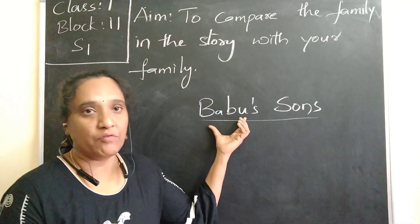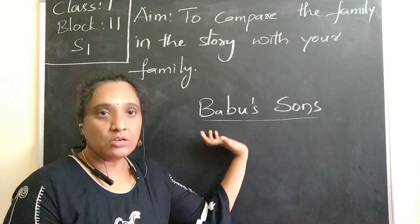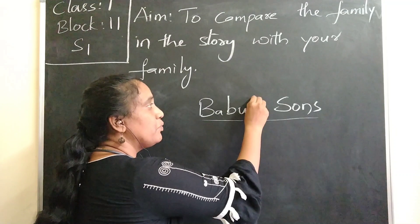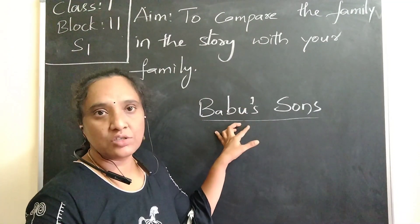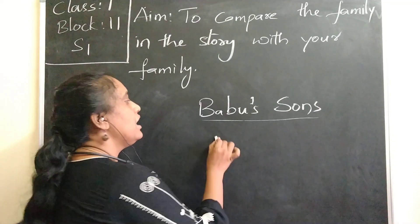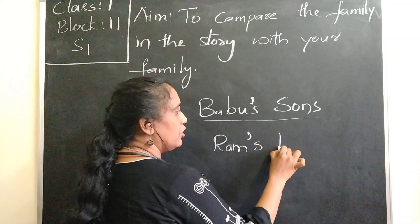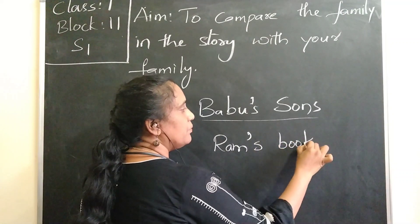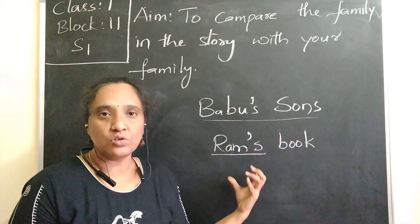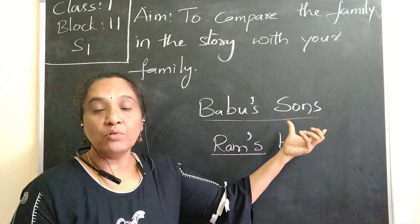Babu is the father's name, so the sons belong to Babu. This is the possessive — it means something belongs to someone. For example, if you are Ram and you have a book, we say Ram's book — Ram apostrophe S book. We call it possessiveness, meaning this book belongs to Ram. In the same way, the sons belong to Babu, so we say Babu's sons.